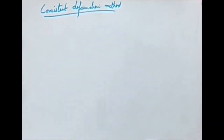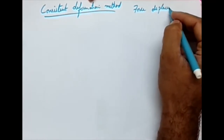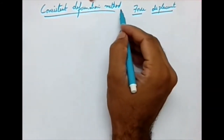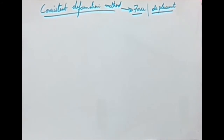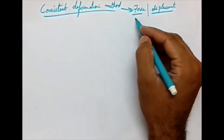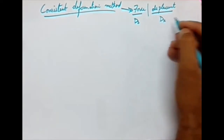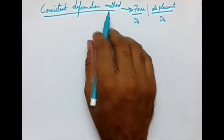In module 2 you already got introduced to two methods of analysis: one is the force method and the other is the displacement method. The consistent deformation method belongs to the force method. In the force method, forces are the primary unknowns and we deal with the degree of static indeterminacy, whereas in the displacement method, displacements are the primary unknowns and we deal with the degree of kinematic indeterminacy. Consistent deformation is the very basic force method you are going to learn here.